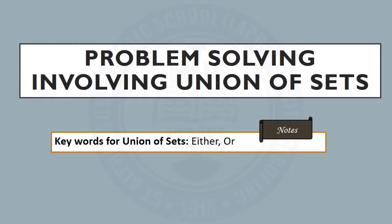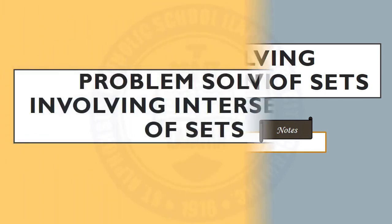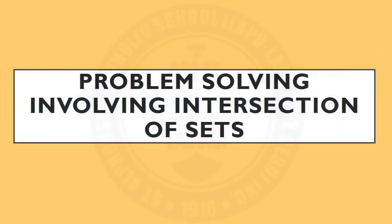The keyword to remember when solving problems involving union of sets is 'either or.' Now let's discuss problem solving involving intersection of sets. Unlike the other set operations, this operation does not need a Venn diagram to solve the problem.